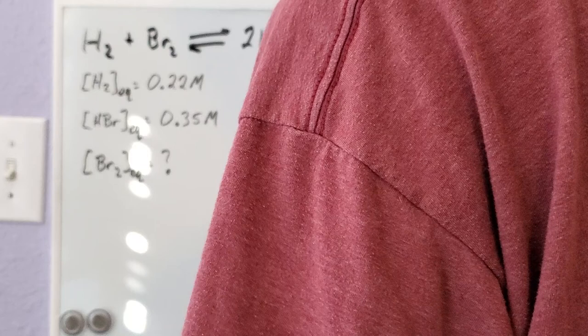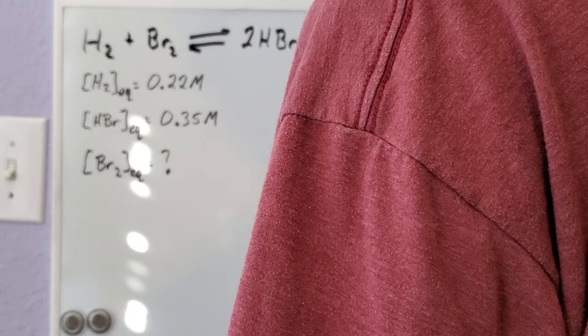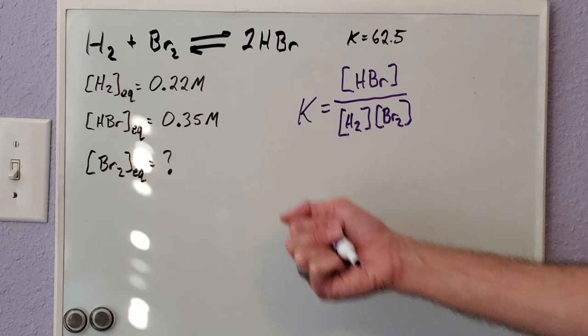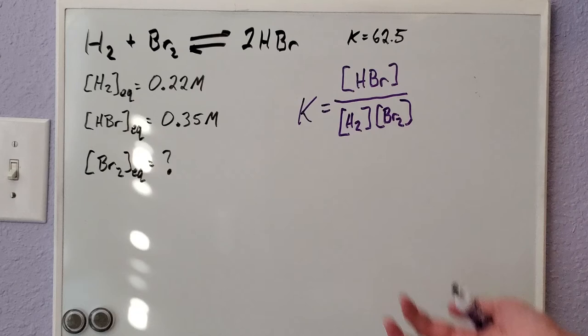One thing I intentionally left off is that HBr has a coefficient of 2. You need to make sure to account for this whenever you're writing out these quotients. If you have a coefficient of 2, it needs to be raised to a power of 2.